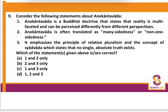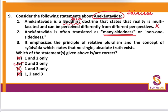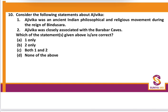Question 9: Statements about Anekantavad — the doctrine of multiple dimensions or multiple realities, given by Jain philosophy. Statement 1 says Anekantavad is a Buddhist doctrine — wrong, it is a Jain doctrine. Once you eliminate statement 1, you get the correct option. Statement 2: it is often translated as 'many-sidedness' — yes, because an issue has multiple sides and one cannot analyze all aspects. Statement 3: it emphasizes relative pluralism and Syadvad, which states that no single or absolute truth exists — multiple dimensions exist. So statements 2 and 3 are correct.